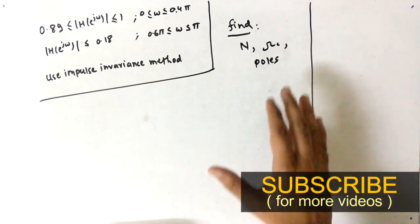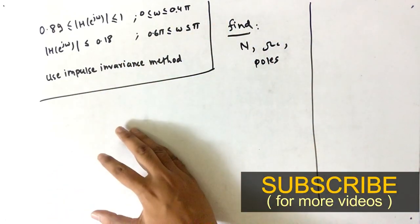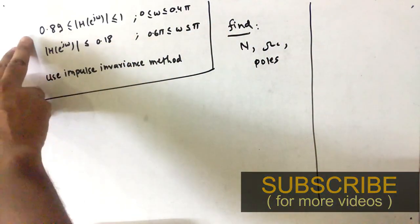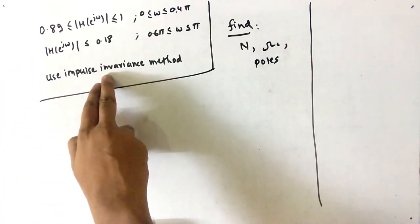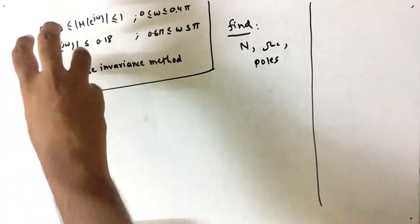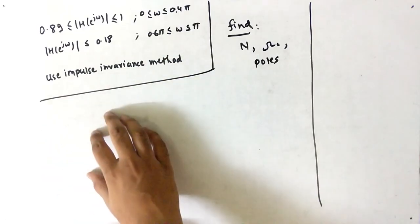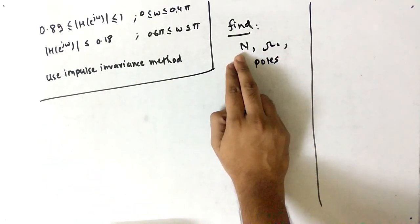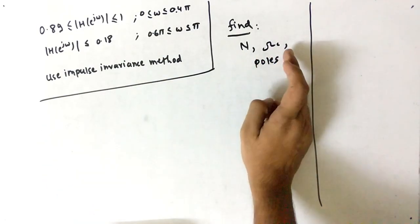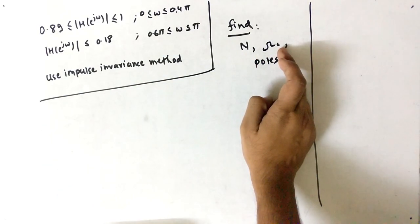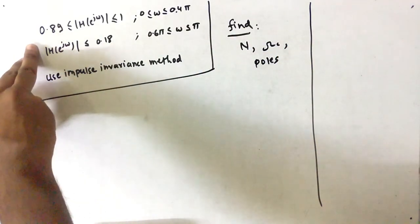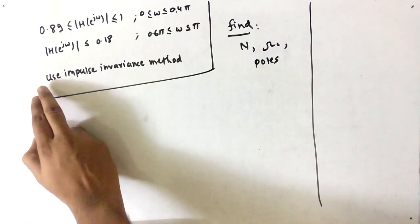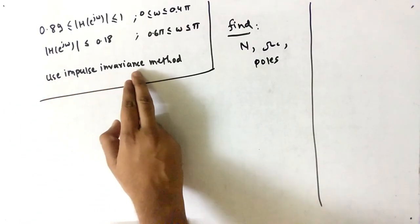In this video we will study about IIR filter design. We have to use the impulse invariance method to solve this question, and we have to find three things: n, the order of the filter, the cutoff frequency, and the poles.